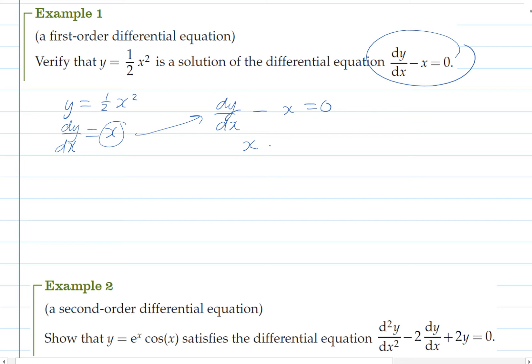And so therefore because this is true we can verify that this is a solution. So we say therefore y equals a half x squared is a solution of dy/dx minus x equals 0.